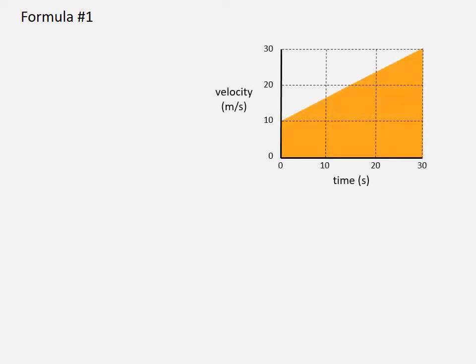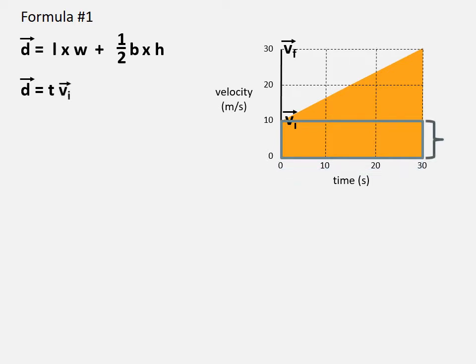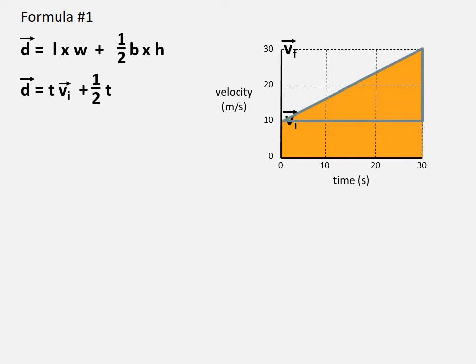Now we are going to derive the same formula mathematically. Looking at the graph, the initial velocity is 10 meters per second and the final velocity is 30 meters per second. The area under the graph equals the displacement and consists of a rectangle and a triangle. For the rectangle, the area is length times width, where length is the total time T and width is VI. For the triangle, the area is half base times height, where the base is T and the height is the difference VF minus VI.